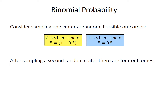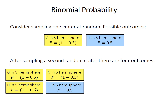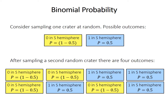After sampling a second crater, there would be four outcomes. If the first trial was a failure, the second could be another failure or a success. If the first was a success, the second could be a failure or another success. The probability of two successive events is the probability of each one multiplied, assuming independence. So the probability of two successive failures is (1 − 0.5) × (1 − 0.5) = 0.25, and each of the four outcomes has a probability of 0.25.